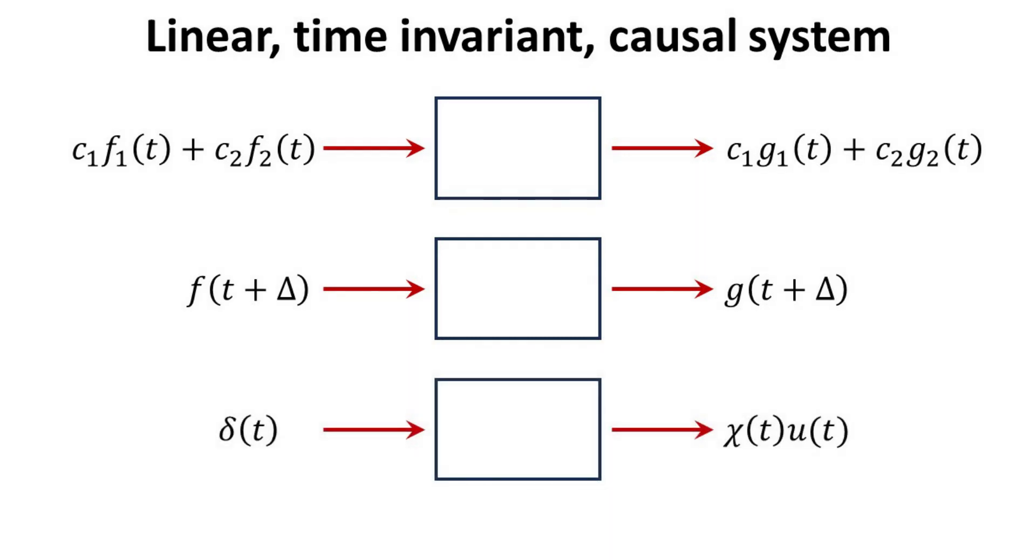For a causal system, the impulse response of the system must only rely on the present and past values of the input to determine the output. This requirement is a necessary and sufficient condition for causality.